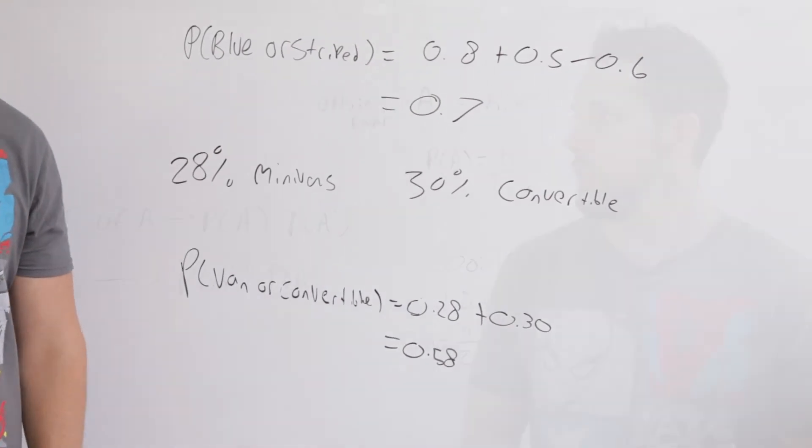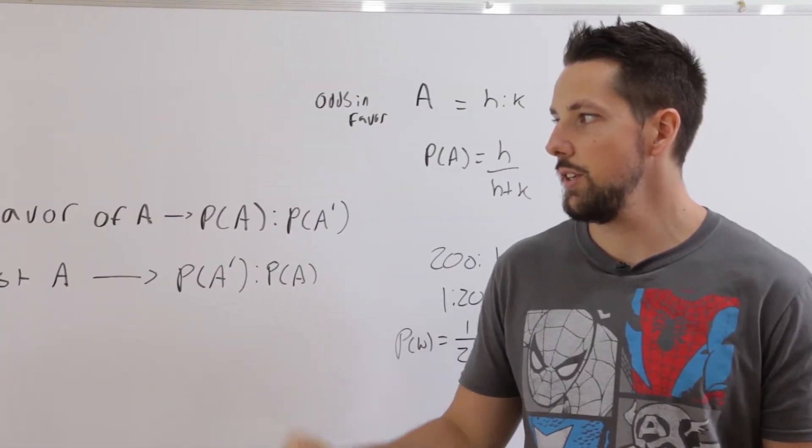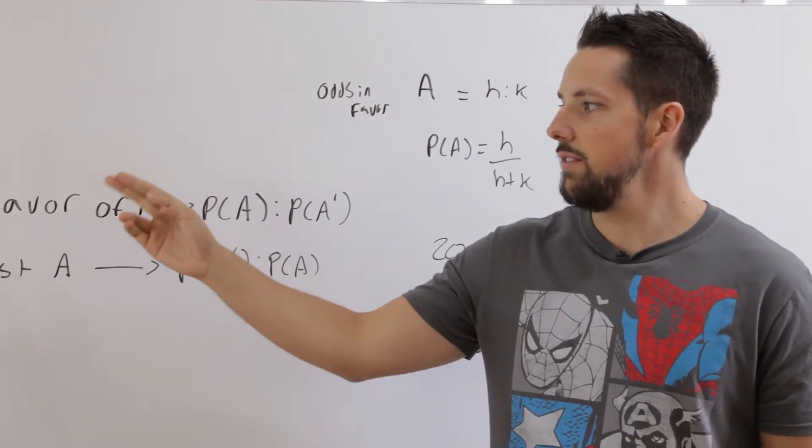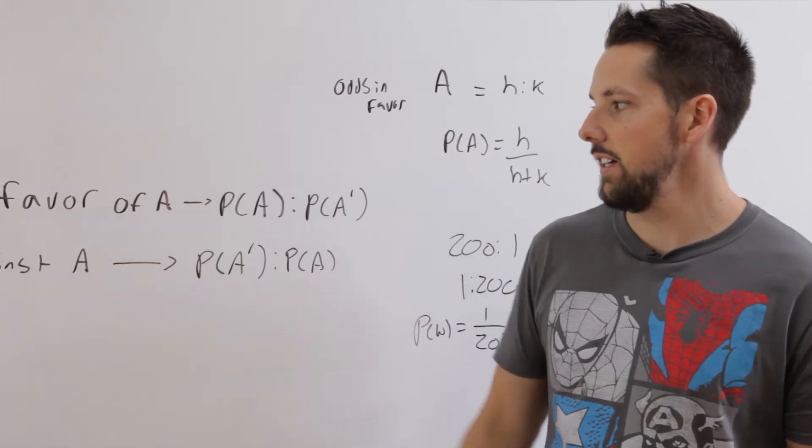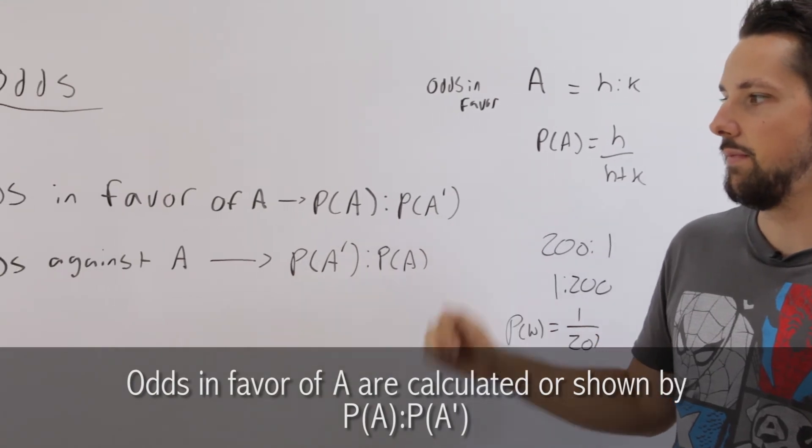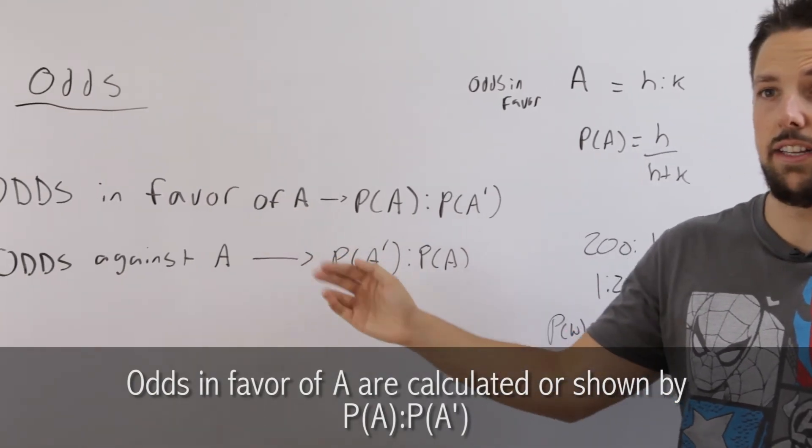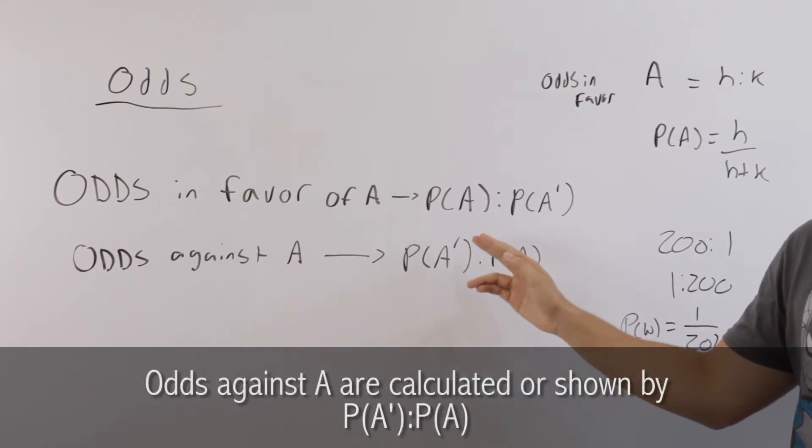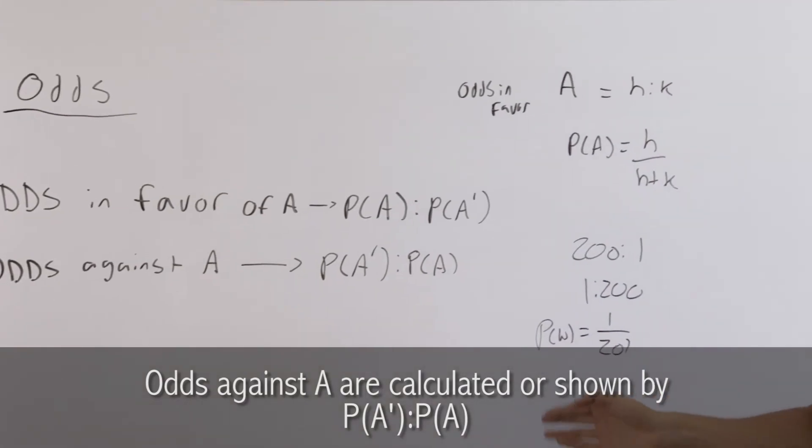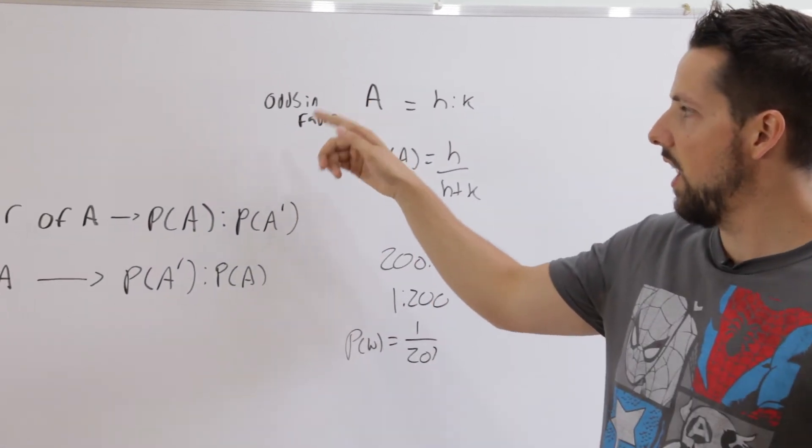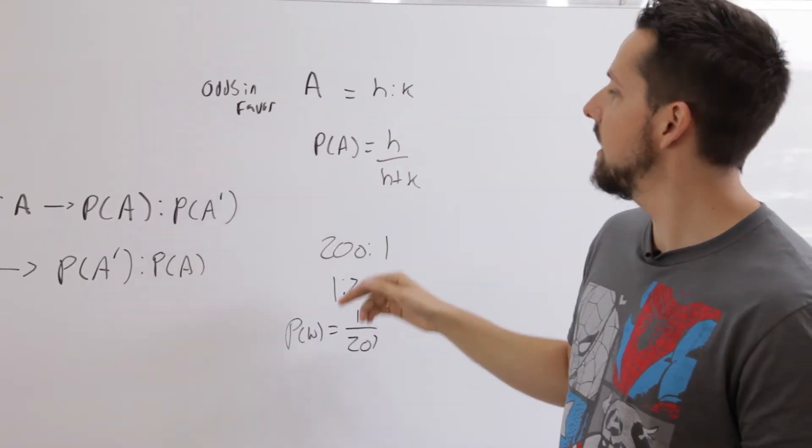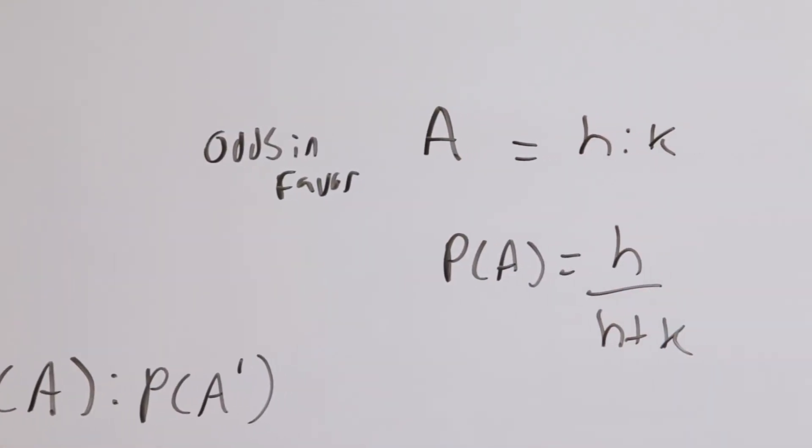We're going to talk about odds. Odds are similar to probability except they deal with ratios instead of fractions. The odds in favor of an event A occurring is just the probability of A occurring as a ratio to the probability of A not occurring. And the odds against A occurring is just the opposite: the probability of A not occurring as a ratio to the probability of A. If you're given odds and you need to convert to probability, if the odds in favor of A occurring are h to k, then the probability of A occurring is h over h plus k.